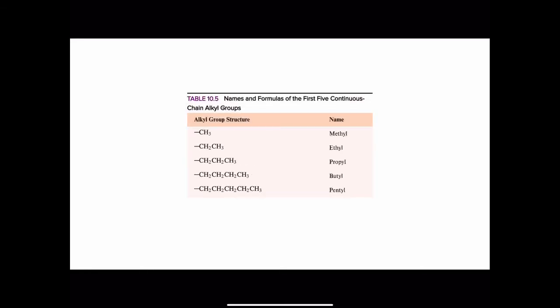You'll also have to memorize the alkyl groups found in Table 10.5. The reason you have to memorize these is to be able to name organic compounds. You have to memorize these alkyl groups: methyl, ethyl, propyl, butyl, and pentyl.